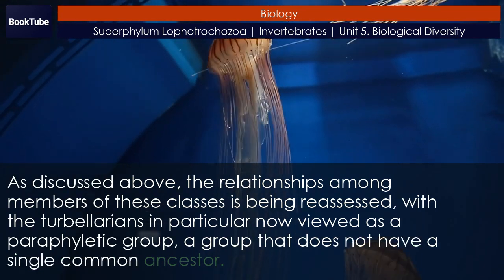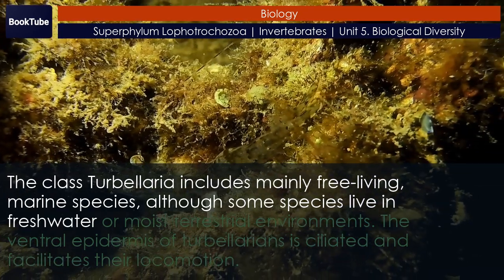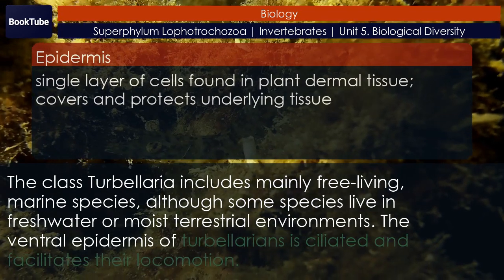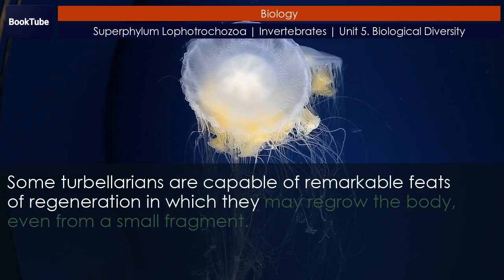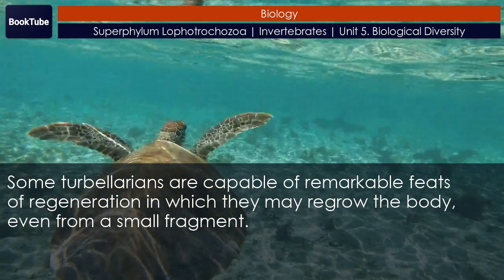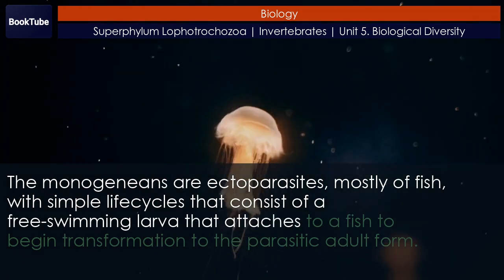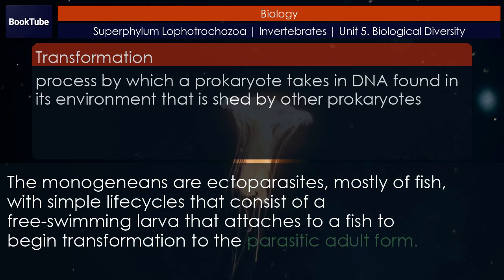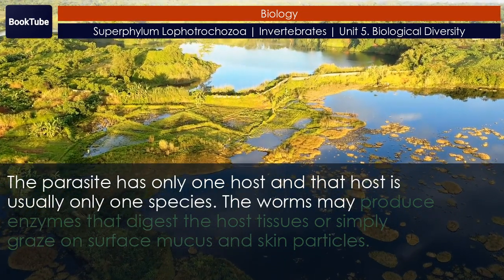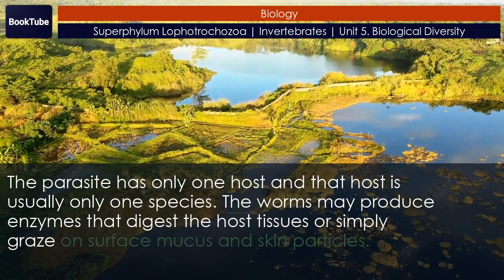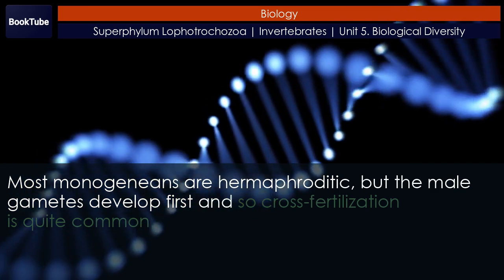The class Turbellaria includes mainly free-living marine species, although some species live in freshwater or moist terrestrial environments. The ventral epidermis of Turbellarians is ciliated and facilitates locomotion. Some Turbellarians are capable of remarkable feats of regeneration, in which they may regrow the body even from a small fragment. The Monogeneans are ectoparasites, mostly of fish, with simple life cycles that consist of a free-swimming larva that attaches to a fish to begin transformation to the parasitic adult form. The parasite has only one host, usually only one species. The worms may produce enzymes that digest host tissues or simply graze on surface mucus and skin particles. Most Monogeneans are hermaphroditic, but the male gametes develop first, so cross-fertilization is quite common.